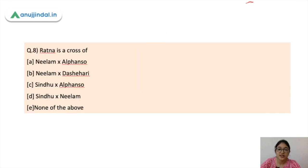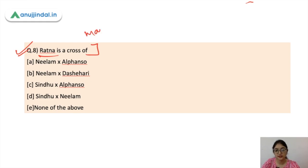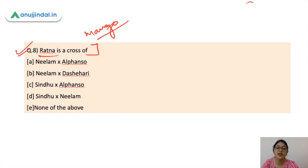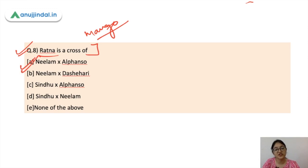The next question: Ratna is a cross of which varieties? Ratna is a hybrid variety of mango. The options are Neelam × Alphonso, Neelam × Dasheri, Sindhu × Alphonso, or Sindhu × Neelam. The correct option is Neelam × Alphonso — Ratna mango is a hybrid of Neelam and Alphonso.